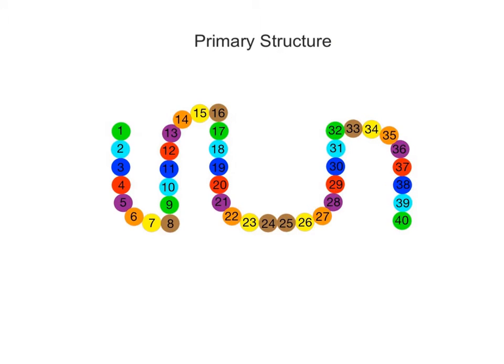The primary structure is the unique linear sequence of amino acids bonded together by covalent bonds to form the polypeptide chain. In this example, there are a total of 40 amino acids bonded together to form the polypeptide. The specific sequence of amino acids in the protein is determined by the genetic code in DNA.